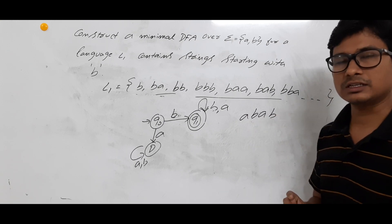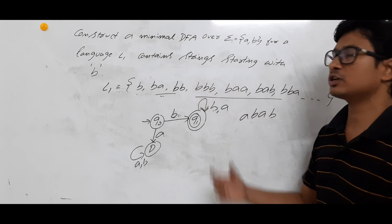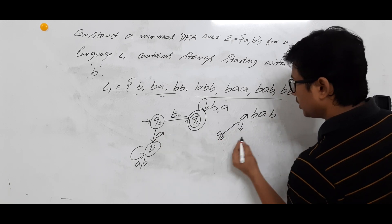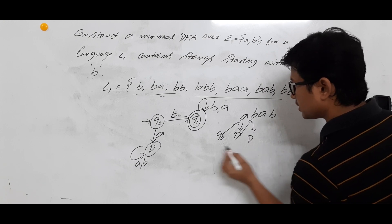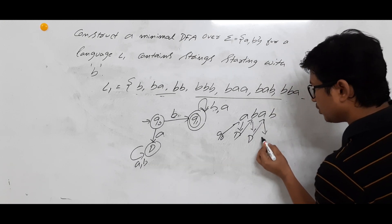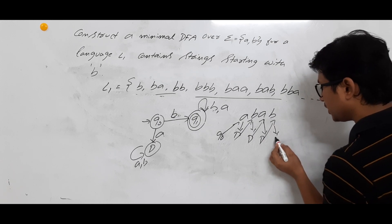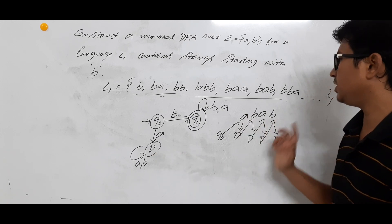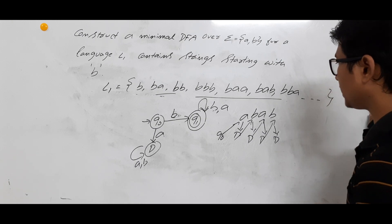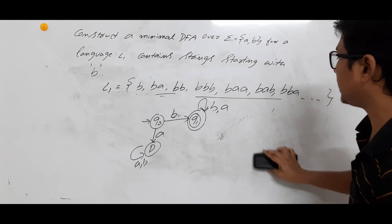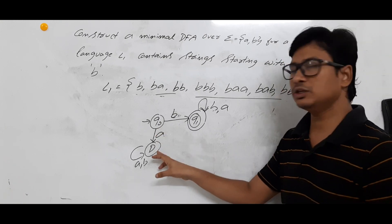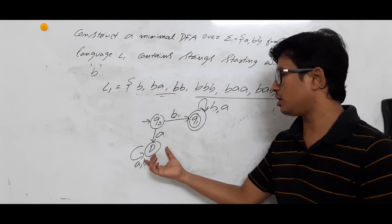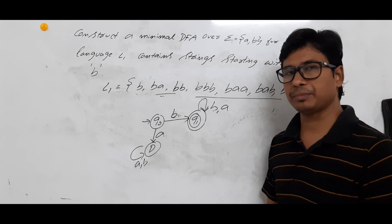Consider the string ABAB — it should not be accepted because it does not belong to language L1. From Q0 on A we go to D; D on B goes to D; D on A goes to D; D on B goes to D. We end in D, which is not a final state, so ABAB is rejected. This is why D is called a dead state or trapped state — once you reach it, you cannot leave.